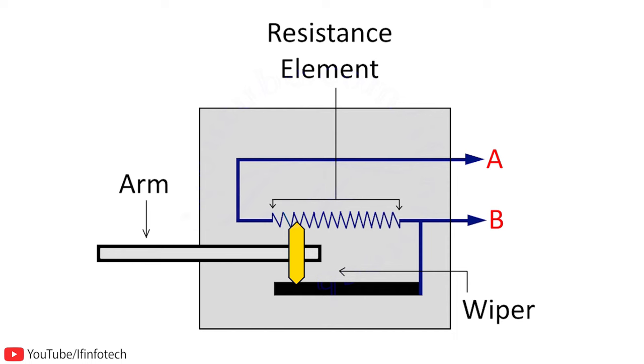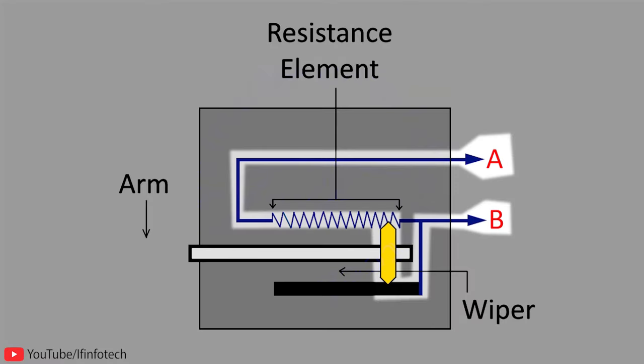Under normal conditions, the slider of the potentiometer is placed at the midpoint of the resistance element. If a displacement from left to right is applied to the arm, the wiper moves to the right and resistance between A and B increases proportionally to the displacement.